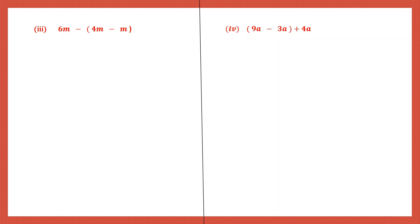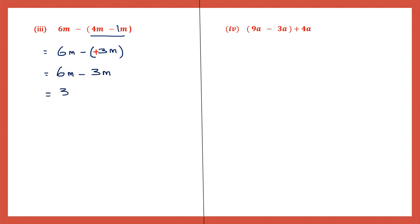Third one: 6m minus 4m minus m. Let's do what's within brackets first, so we write the first term as it is. Now 4 minus 1 is 3. Now let me put that back: 4 minus 1 is 3m. Now we'll follow the rules. Before I open my brackets, I have to see what sign is there before it - I have a minus sign. If I have a minus sign, the sign of all the terms inside the bracket will change. So plus 3m will become minus 3m. So now 6 minus 3 is 3m. The final answer here is 3m.